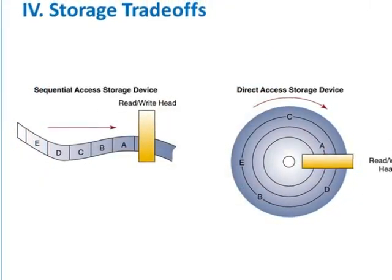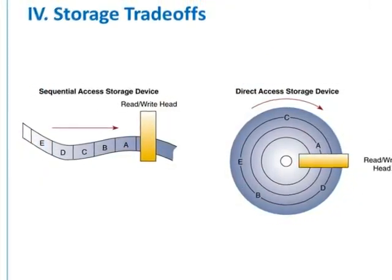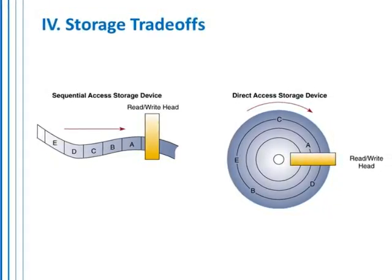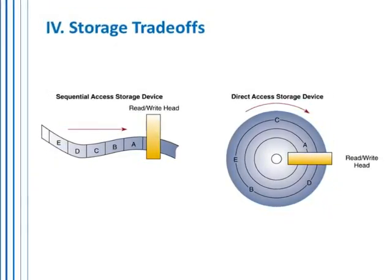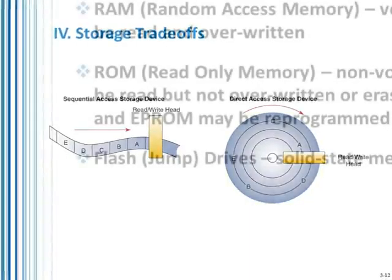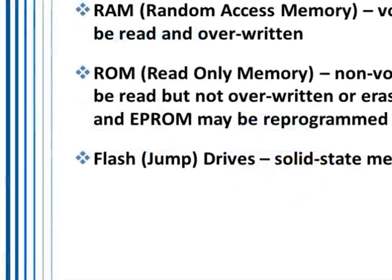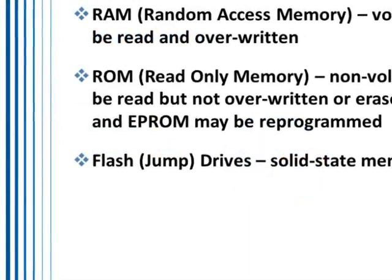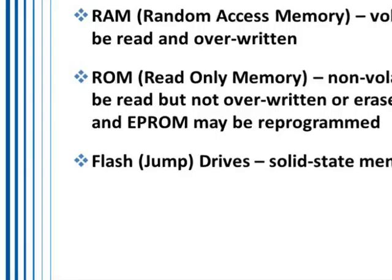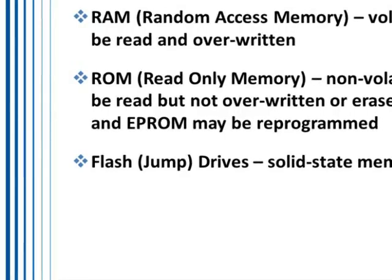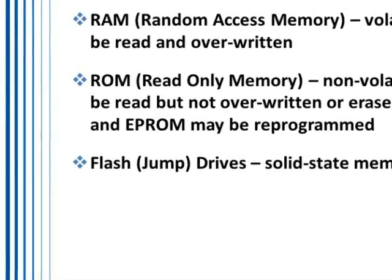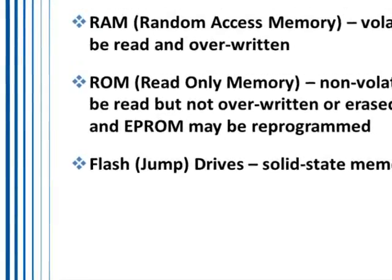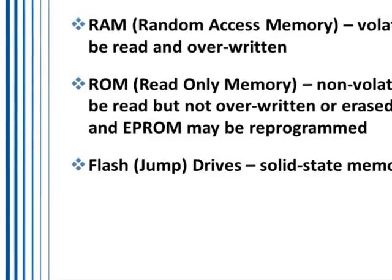Here's a visual representation on the left of sequential access and on the right, direct access. As identified before, semiconductor memory is RAM — random access memory. It's volatile, it can be changed, and it can be overwritten.